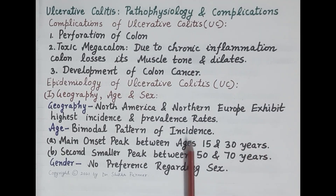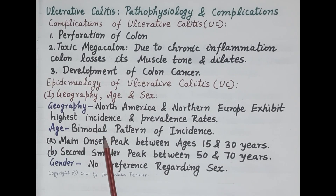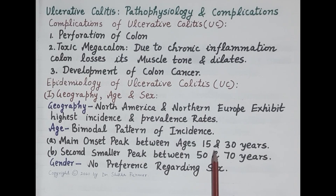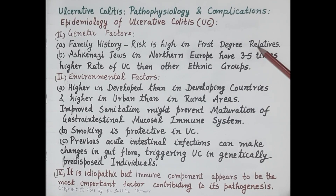Regarding epidemiology, North America and Northern Europe exhibit the highest incidence and prevalence rates of ulcerative colitis. The disease shows a bimodal pattern of incidence — the main onset peak is between 15 to 30 years of age, and a second smaller peak is between 50 and 70 years of age. There is no sex preference. Family history of inflammatory bowel disease is the most important risk factor, with high risk in first-degree relatives. Ashkenazi Jews have rates three to five times higher than other ethnic groups.